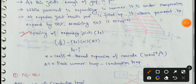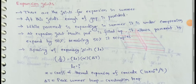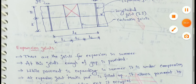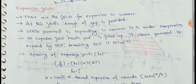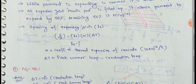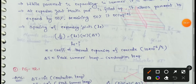The spacing of expansion joints: the maximum spacing between two expansion joints is 140 meters as per IRC.